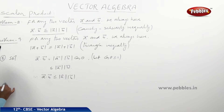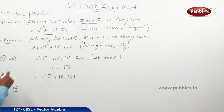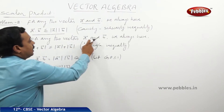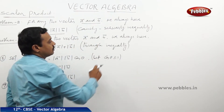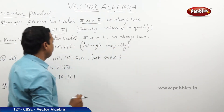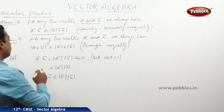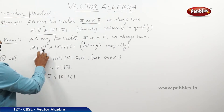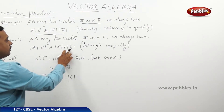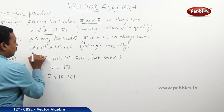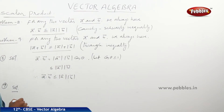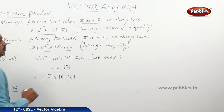Next, the ninth one. For any two vectors a and b, we always have |a+b| less than or equal to |a| + |b|.